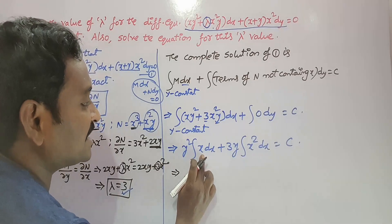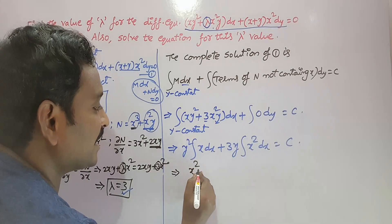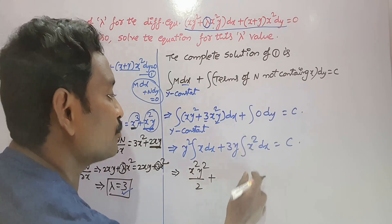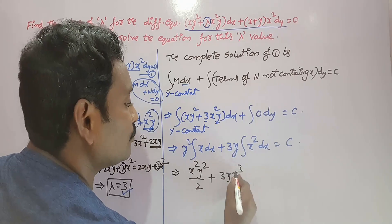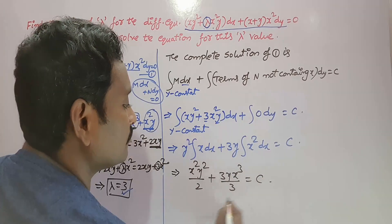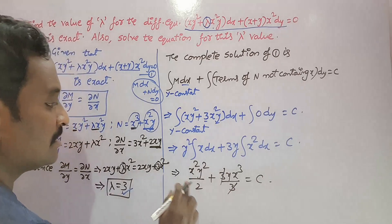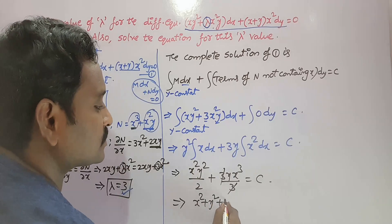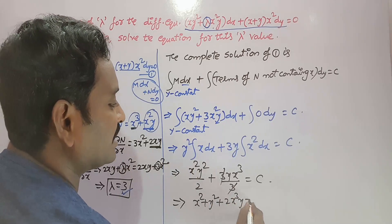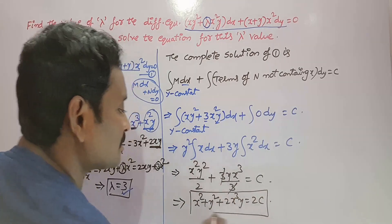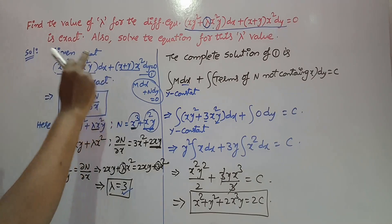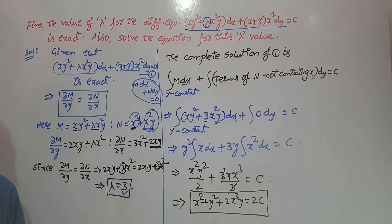Integrating: integral of x is x squared by 2, so we get x squared y squared by 2. Integral of x squared is x cubed by 3, so 3y times x cubed by 3 — the 3s cancel, leaving y x cubed. Taking LCM 2: x squared y squared plus 2x cubed y equals 2c. This is the required general solution of the given equation.